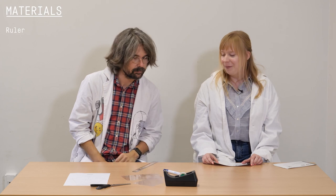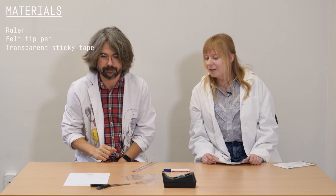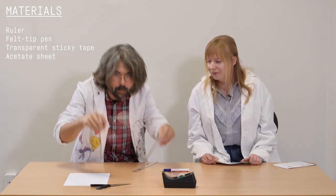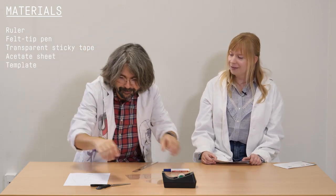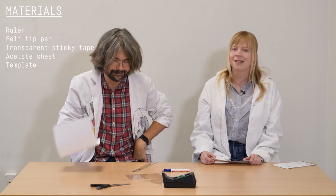So for the first experiment we need a ruler, we need a felt tip pen, we need tape, acetate sheets, a template, and scissors.